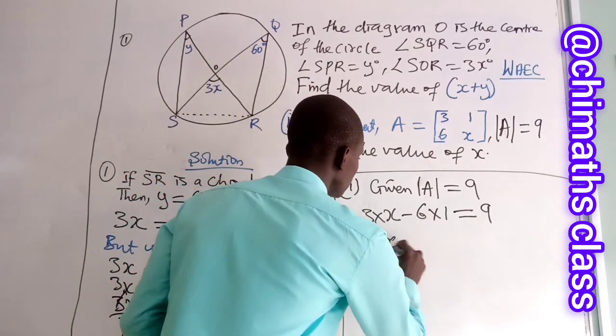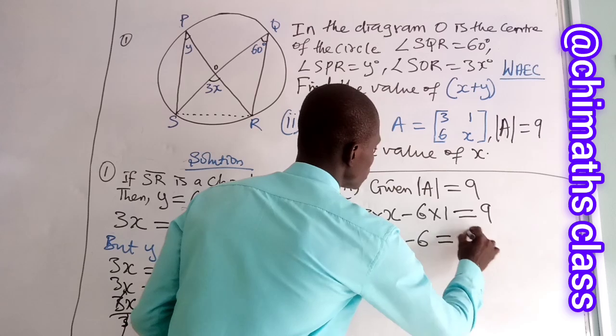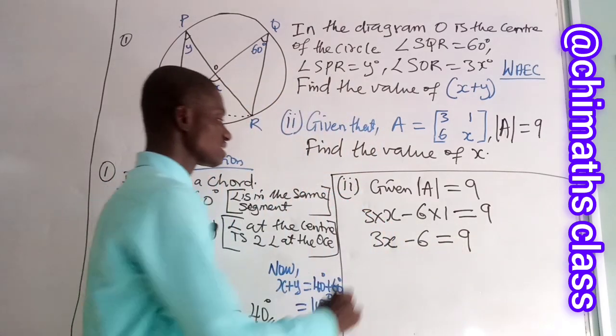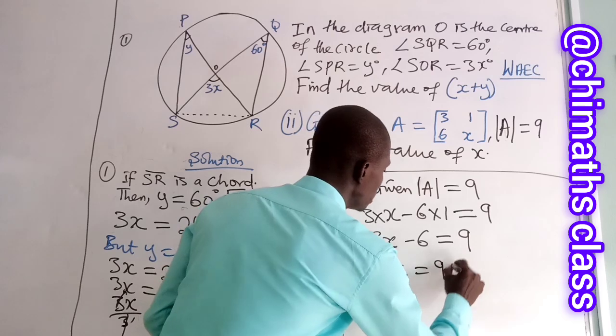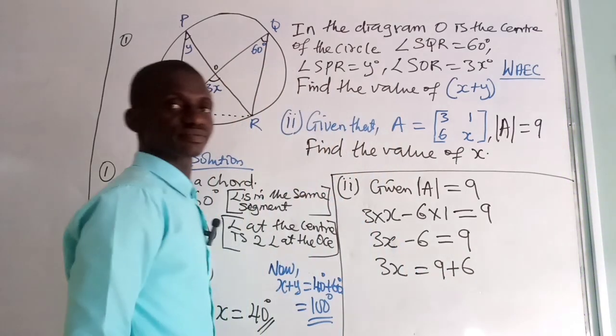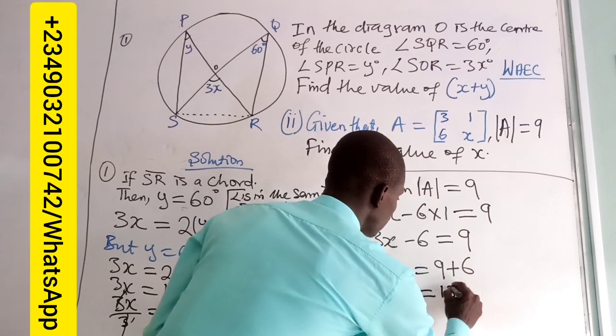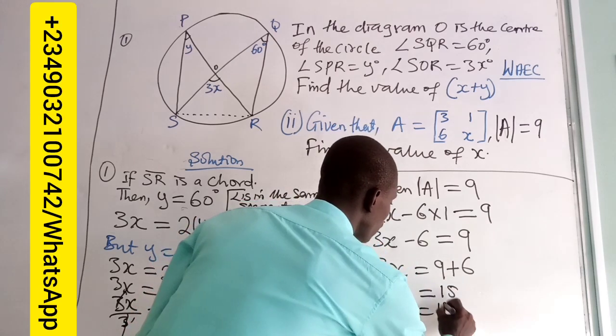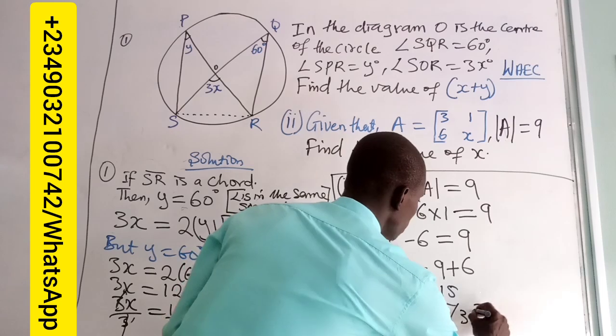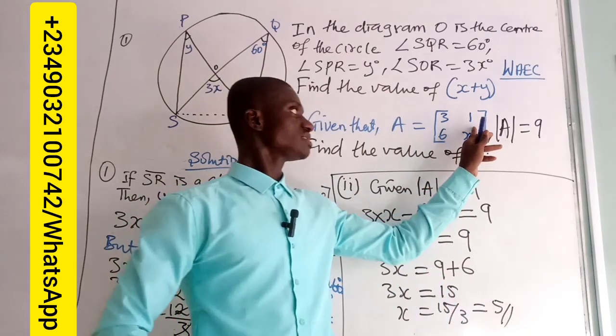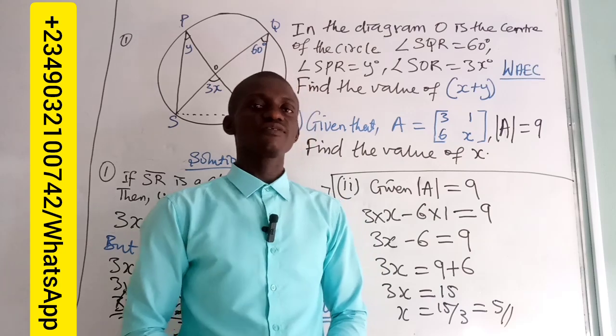So we have here 3X minus 6Y is equal to 9. Collect items. We have here 3X is equal to 9 plus 6. So that 3X is equal to 15, and X is equal to 15 divided by 3, which will give us 5. So the value of X in this matrix is 5.